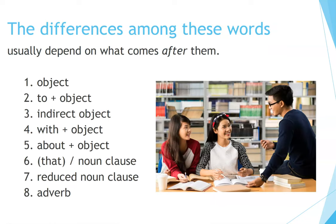The differences among these words usually depend on what comes after them. 1. Object. 2. To plus object. 3. Indirect object. 4. With plus object. 5. About plus object. 6. That noun clause. 7. Reduced noun clause. 8. Adverb.